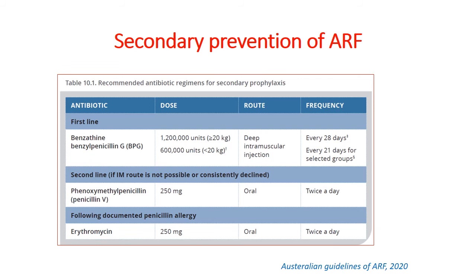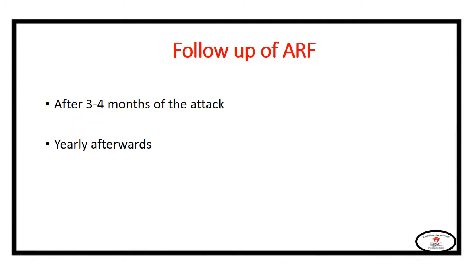The Australian guidelines for acute rheumatic fever are quite similar to the American guidelines in prescribing penicillin G for secondary prophylaxis. For individuals intolerant to intramuscular injections, they prescribe oral penicillin. Patients with acute rheumatic fever should be followed up after three to four months of the first attack, and then yearly afterwards, unless they have rheumatic heart disease, in which case they should be followed up more frequently.